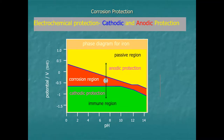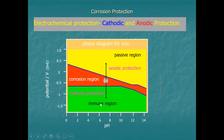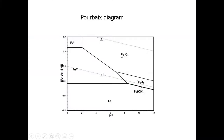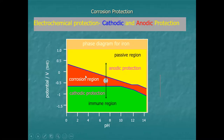However, anodic protection is a rather dangerous way of protecting steel — you can't guarantee it will work. Cathodic protection, by contrast, always works. If the oxide film grows too thick, it will crack, become non-protective, and you'll get breakaway corrosion. So although anodic protection is mentioned for completeness, you will much more commonly encounter cathodic protection in practice.